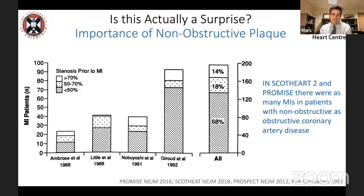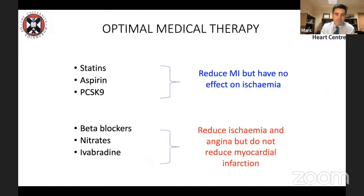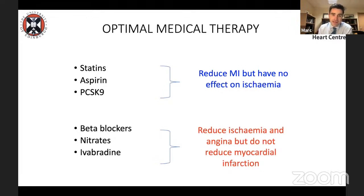Why the discrepancy? This is a classical case of correlation versus causation: ischemia is associated with adverse prognosis, but doesn't cause those events. This is supported by the underlying pathophysiology — we've known that most heart attacks are caused by culprit lesions that, on antecedent angiography, were non-obstructive. Meanwhile, statins, aspirin, and PCSK9 inhibitors reduce myocardial infarction but have no impact on ischemia, while antianginal agents reduce ischemia but have no impact on myocardial infarction.